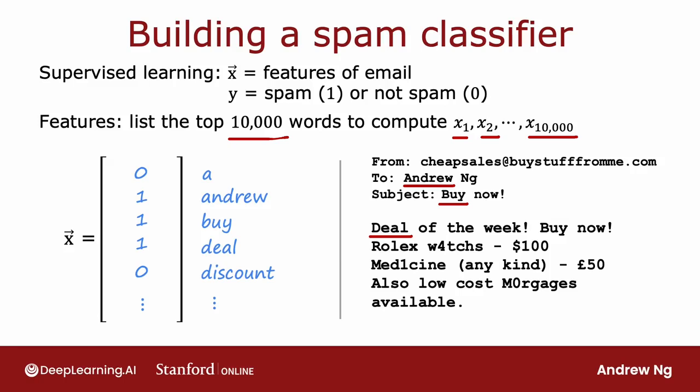There are many ways to construct the feature vector. Another way would be to let these numbers not just be 1 or 0, but actually count the number of times a given word appears in the email. So if buy appears twice, maybe you want to set this to 2. But setting it to just 1 or 0 actually works decently well. Given these features, you can then train a classification algorithm such as a logistic regression model or a neural network to predict y given these features x.